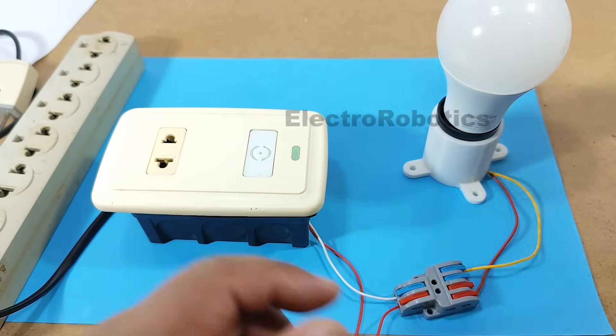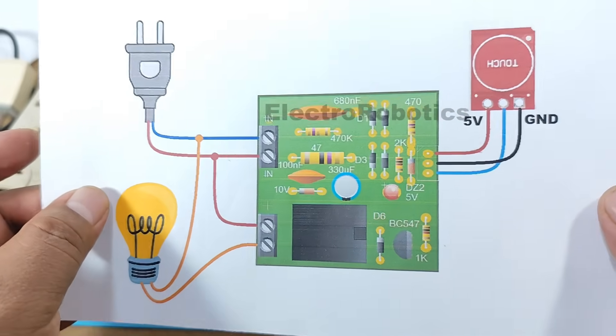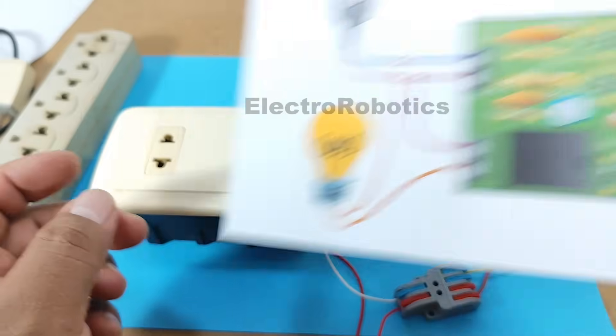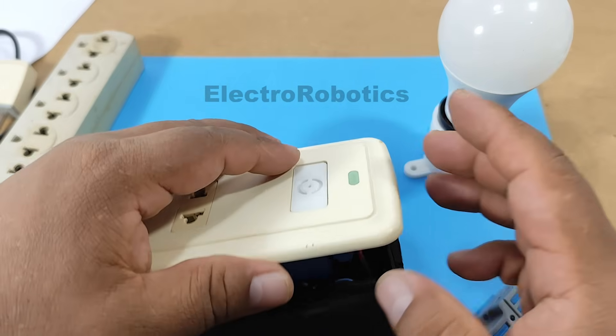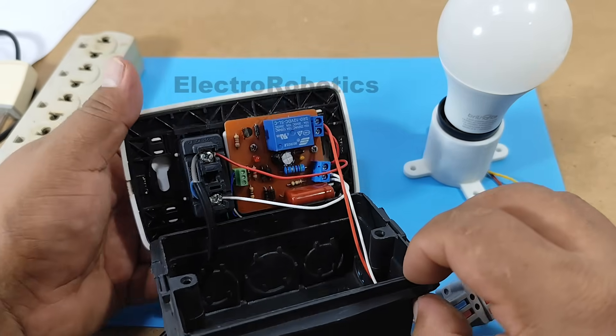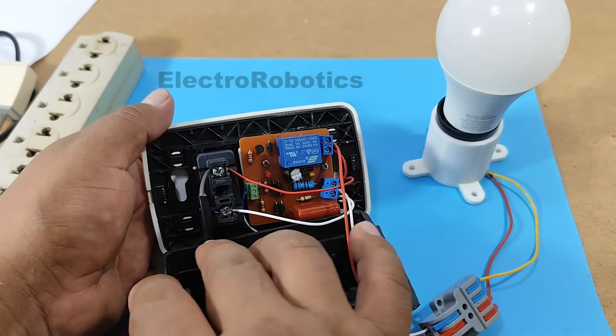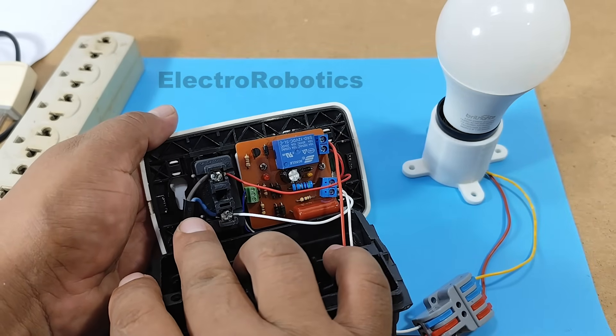However, don't forget that it has to be exactly as mentioned in the connection diagram. So, it shouldn't be any different, but let's take a look. Here we can see that the power outlet is energized.